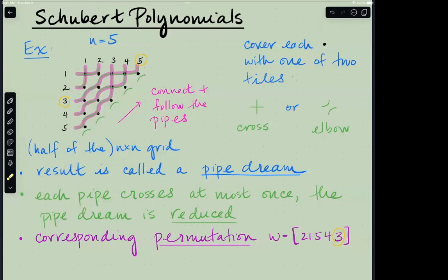You can also read off a permutation corresponding to a pipe dream just by watching where you enter and where you exit, and then recording. So watch where this number ends up, and that's what you record in the window of the permutation.